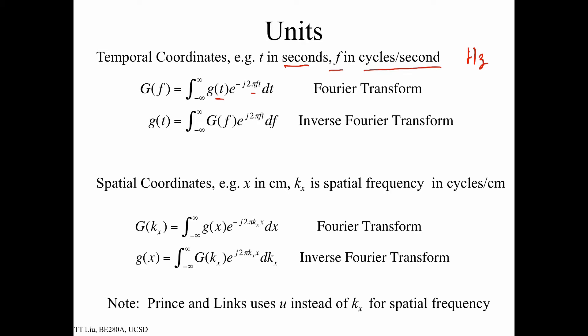On the other hand, we can also imagine our function is a function of space. In that case, we typically use x, and that could be, for example, in centimeters or millimeters or meters, whatever unit we think is most appropriate. We'll denote kₓ as the spatial frequency, and if x is in centimeters, then this would be in cycles per centimeter. So in this case, x denotes space and kₓ is spatial frequency. As you'll note in the textbook, they use u instead of kₓ for spatial frequency, so that's one thing to keep in mind.